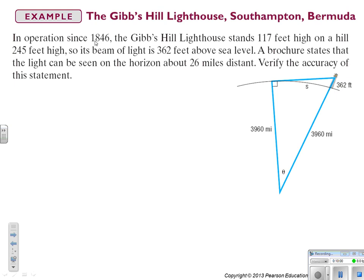All right. So let's look at this lighthouse problem. In operation since 1846, the Gibbs Hill lighthouse stands 117 feet high on a hill that is 245 feet high. So its beam of light is 362 feet above sea level. So that's right here. A brochure states the light can be seen about 26 miles distant. Verify the accuracy of this statement. So right here they've got the curvature of the earth and if you do what I do and I googled radius of the earth, 3,960 miles is the radius of the earth. So if I'm looking at this nice right triangle here, I have a...